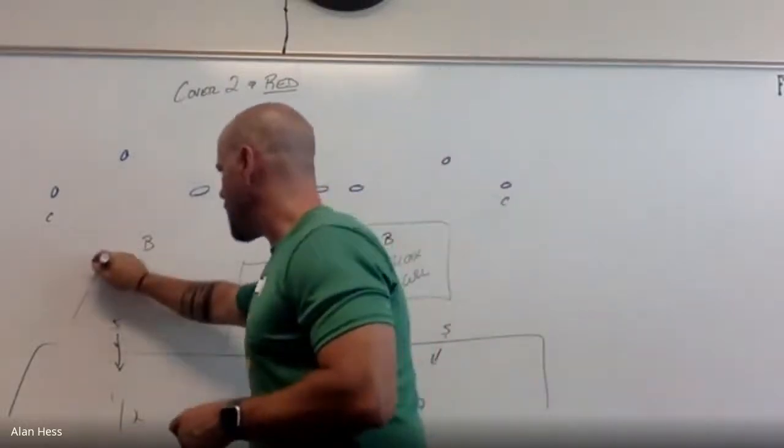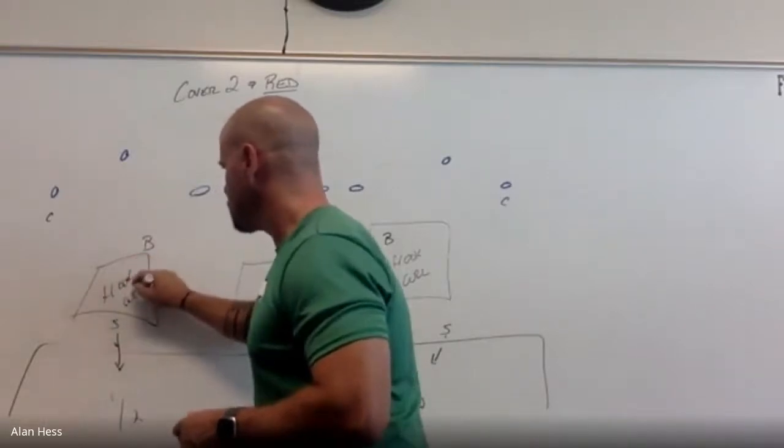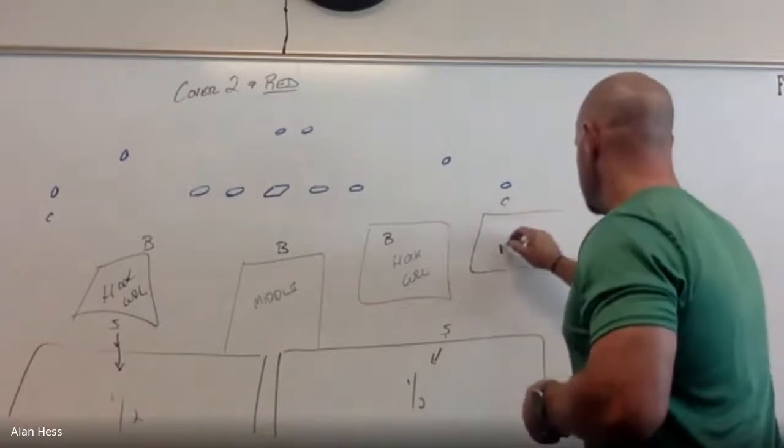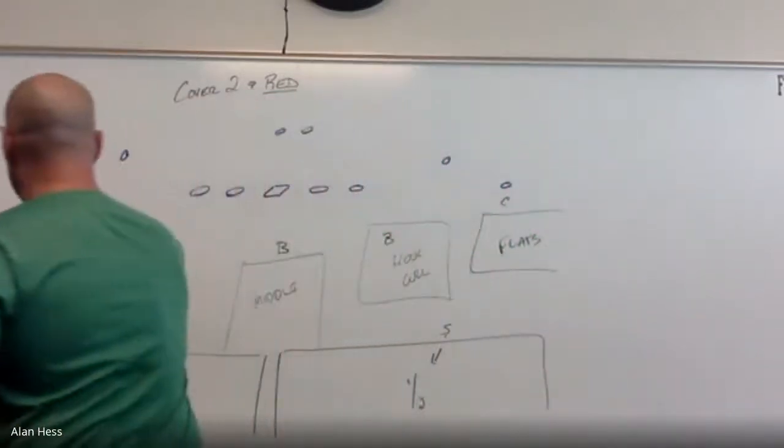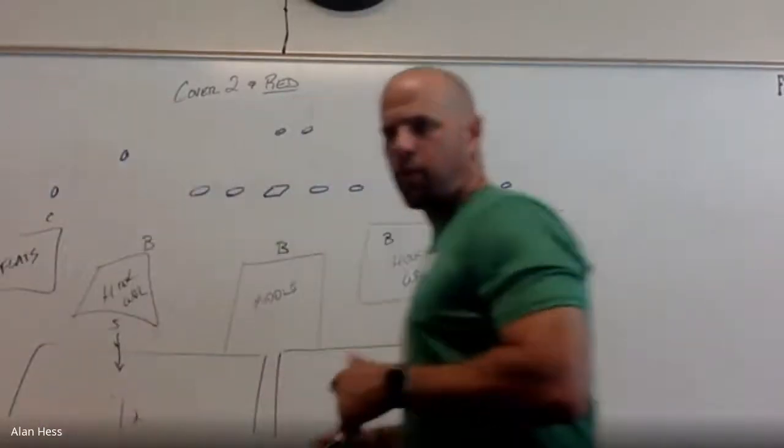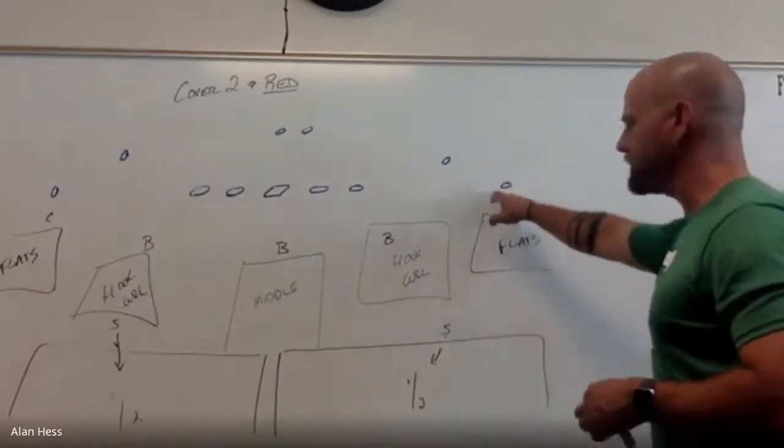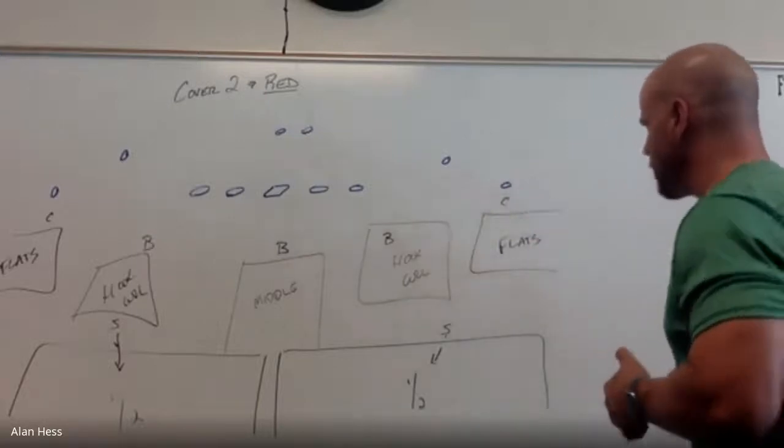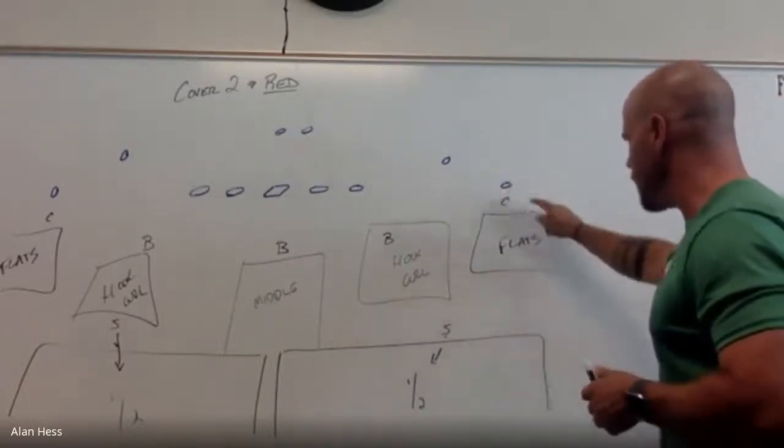Outside backer here, you have that hook curl. And then corners, you have the flats. You have flats on both sides. You are still in your press alignment. You are pressing that receiver. We're not making contact per se, but we're upping him. We're not gonna give him a free release. As he releases, you get to that flat area here.